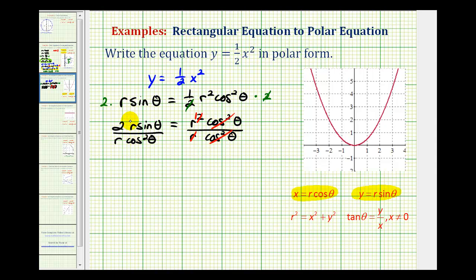And on the right side, notice how we have r over r, which would simplify to one. So on the left side, we have two sine theta divided by cosine squared theta, and on the right side, we have just r. So we could leave the equation in this form, and just say r is equal to two sine theta divided by cosine squared theta.